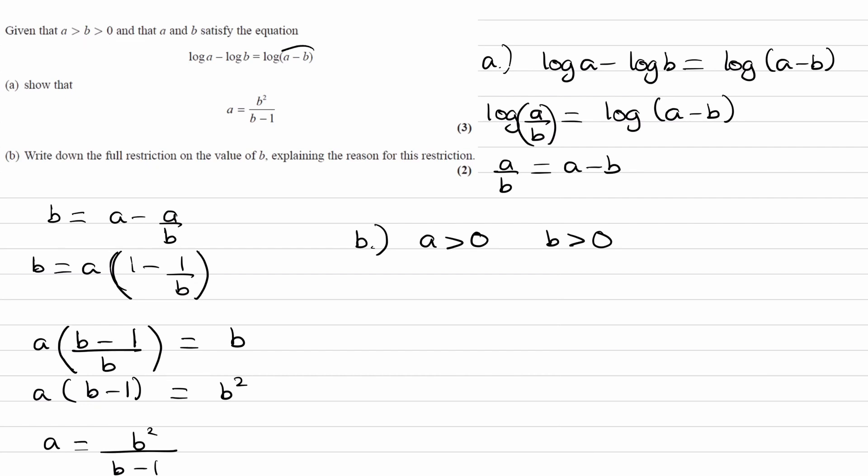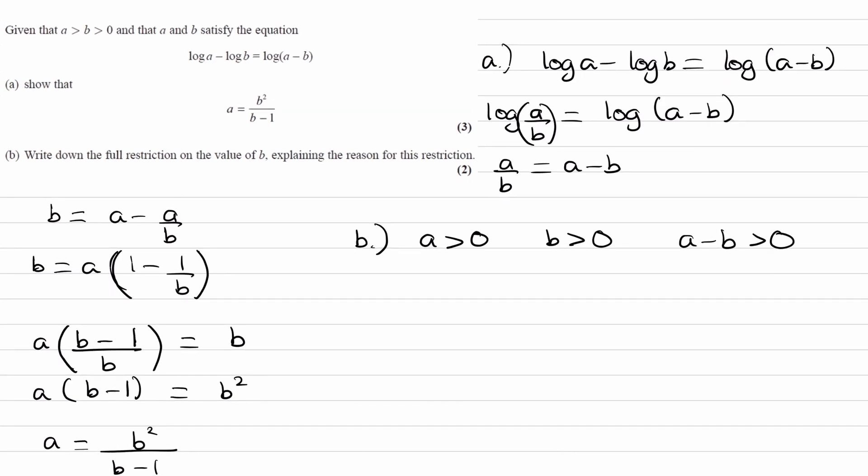But why does A have to be bigger than B? Well, that comes into this part here. So A minus B, what's inside that logarithm, must also be positive. And therefore, A must be bigger than B. And when you combine these three things, we end up with that inequality there. But that's not our answer. That's just repeating what's in the question already. But if we have an understanding of that, that should then allow us to tackle the actual question itself. What is the full restriction on the value of B?